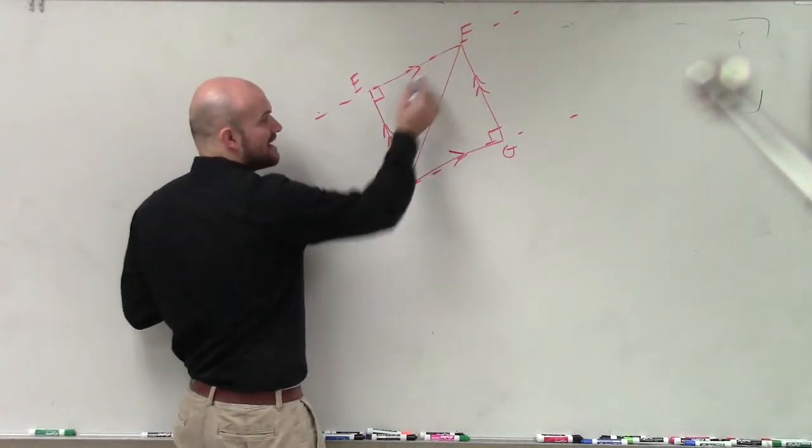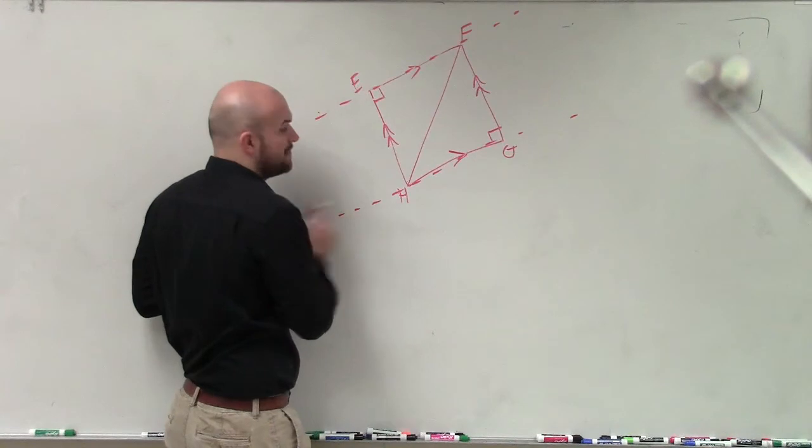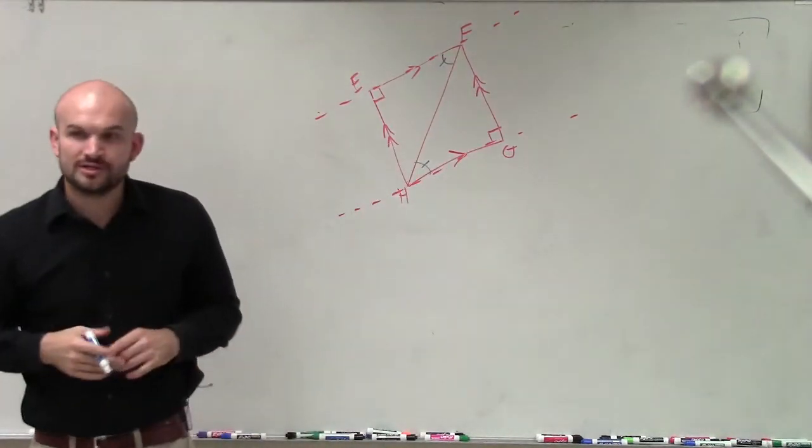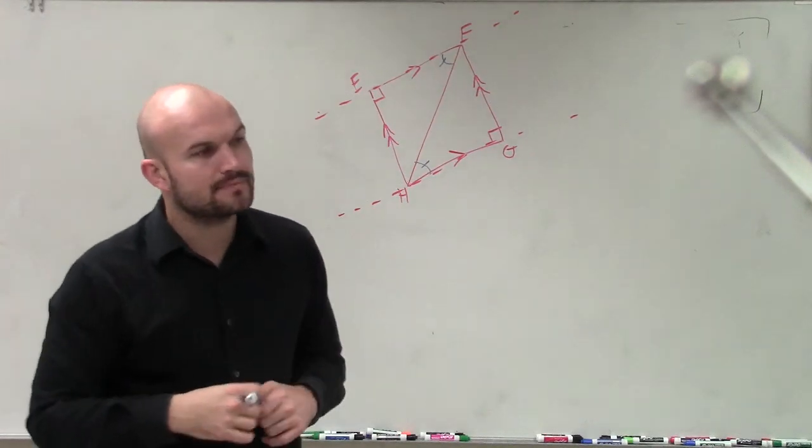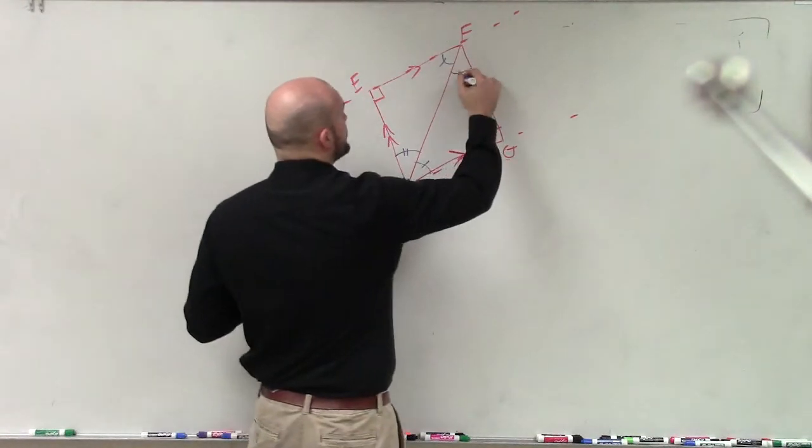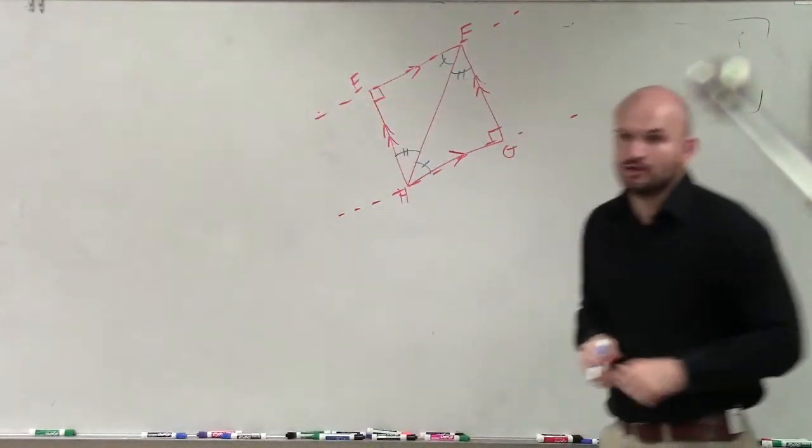So since I have angles interior of my parallel lines, I can say that these two angles are congruent because they are alternate interior angles. Then I can also say that these two angles are congruent because alternate interior angles.